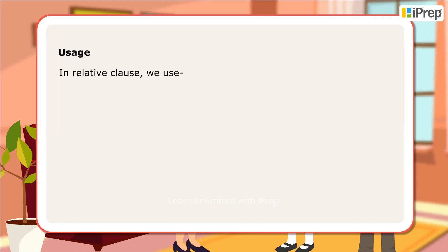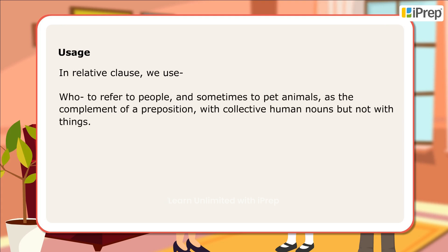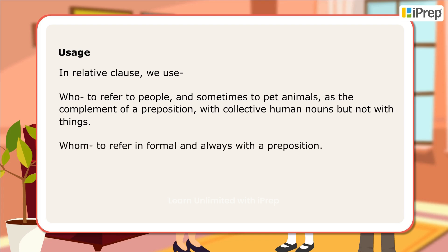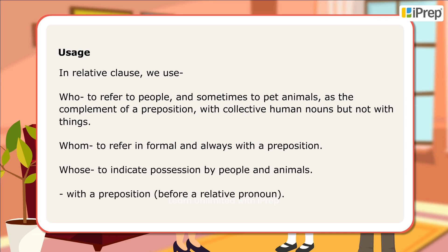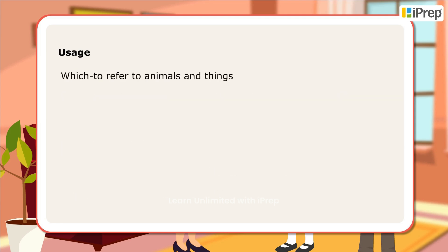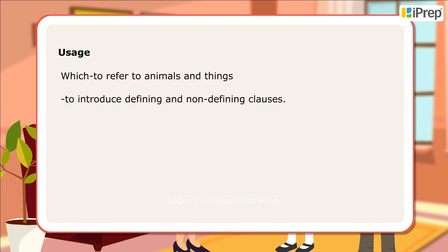Usage: In relative clauses, we use 'who' to refer to people and sometimes to pet animals, as the complement of a preposition, with collective human nouns, but not with things. 'Whom' is used in formal contexts and always with a preposition. 'Whose' indicates possession by people and animals, and is used with a preposition before a relative pronoun. 'Which' is used to refer to animals and things, and to introduce defining and non-defining clauses.